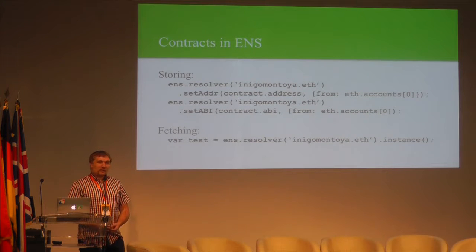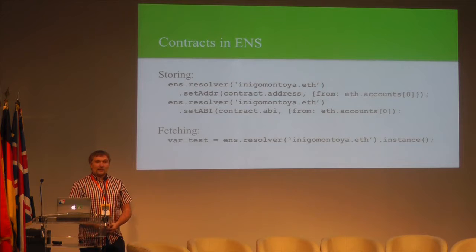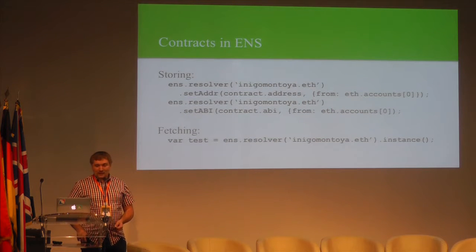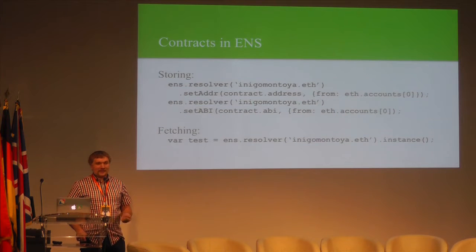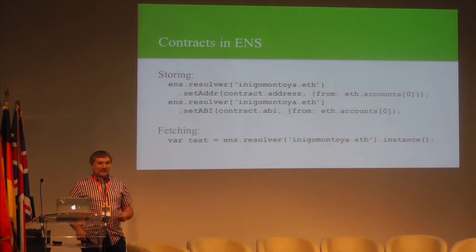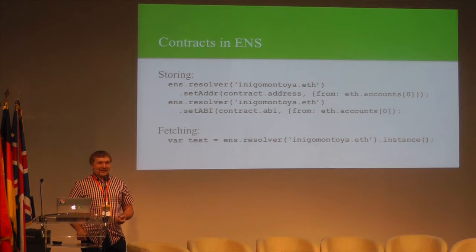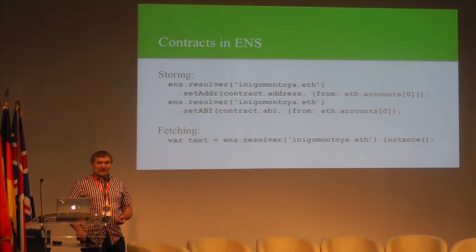With ENS you can now store a compressed version of your contract ABI inside a resolver, either against a name or against a reverse record, and the JavaScript library supports looking it up from both. Storing it is straightforward — you ask for the resolver for a particular address, set the address, and then set the ABI. ABIs can be stored in a number of formats including GZIP compressed and CBOR encoded, which permits easier access on-chain. The largest contract ABI I could find — that of the DAO — is about 8 KB uncompressed, about 6 KB in CBOR, and about 1.5 KB when GZIP compressed, making it extremely tractable to store in a blockchain transaction.